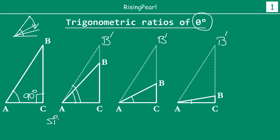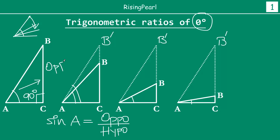Before we totally merge point B and point C, let's write the trigonometric ratio for sine of angle A. Remember, the whole point is to find out the trigonometric ratios for zero degrees. Sine A equals the ratio of opposite side divided by hypotenuse. In triangle ABC, for angle A, the opposite side is BC and the hypotenuse is AB — the side opposite to the 90 degree angle C. So sine A equals BC divided by AB.